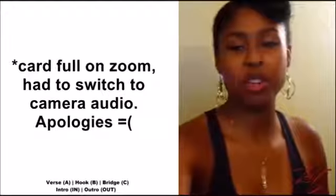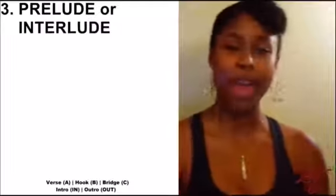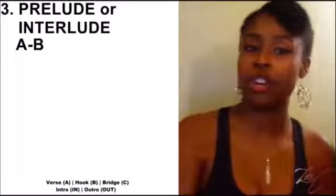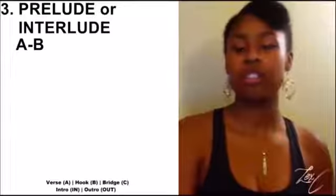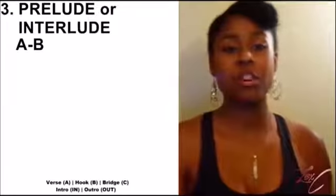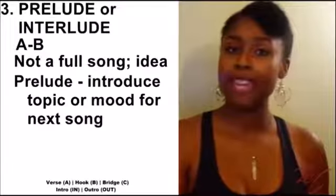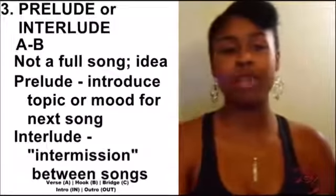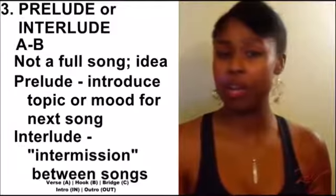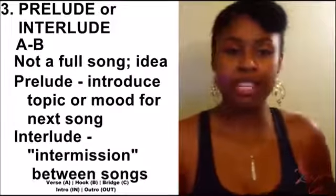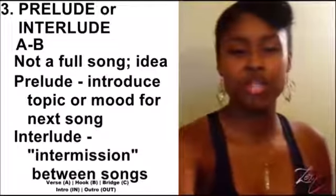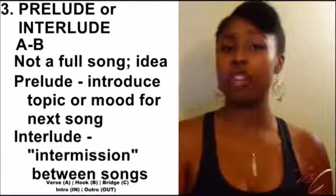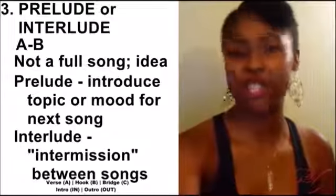The next category is a prelude or interlude, which is an even simpler format compared to the club banger. The prelude or interlude format is going to be A, B — just verse, hook. This is the kind of structure you'll see on preludes and interludes included on projects or albums. It's not considered a full song. A prelude introduces a topic or sets the mood for the next song coming up, while an interlude serves as a break between a bigger picture — think of it like an intermission. You can use this format for small or short topics you want to touch on without fully fleshing them out.